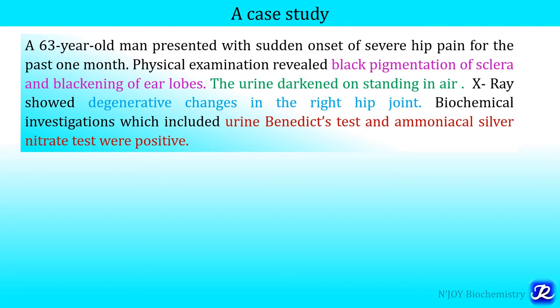A 63-year-old man presented with sudden onset of severe hip pain for the past one month. Physical examination revealed black pigmentation of sclera and blackening of ear lobes. The urine darkened on standing in air. X-ray showed degenerative changes in the right hip joint, and biochemical investigations including urine Benedict test and ammoniacal silver nitrate test were positive.